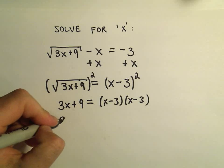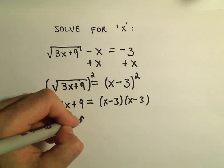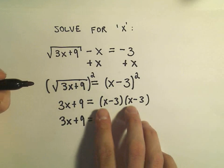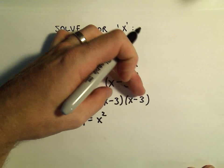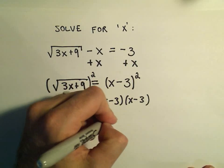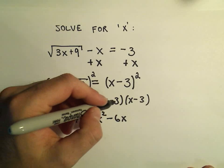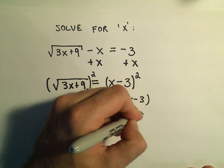So on the left again we just have 3x plus 9. On the right when I multiply it out I'll get x times x which is x squared. I'm going to get a negative 3x and another negative 3x which is negative 6x. Negative 3 and negative 3 is going to give us positive 9.